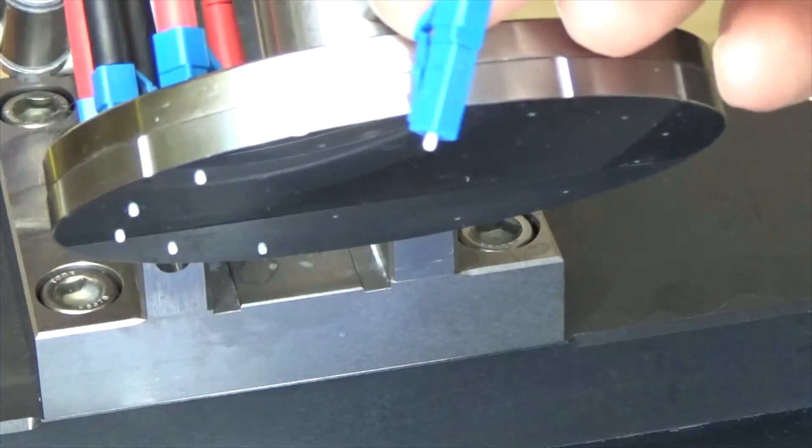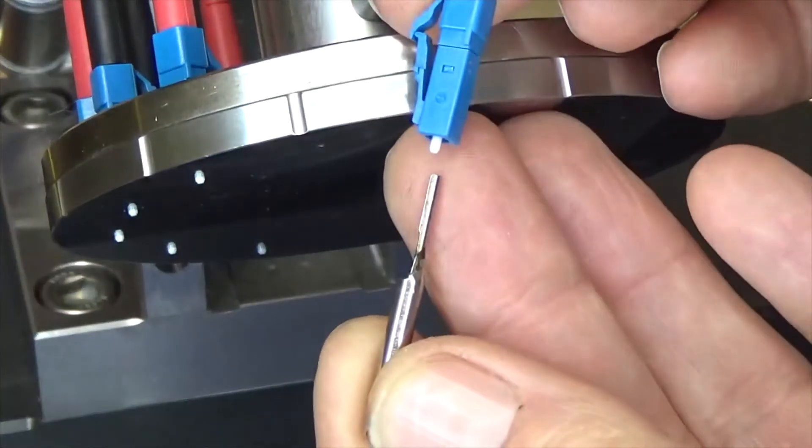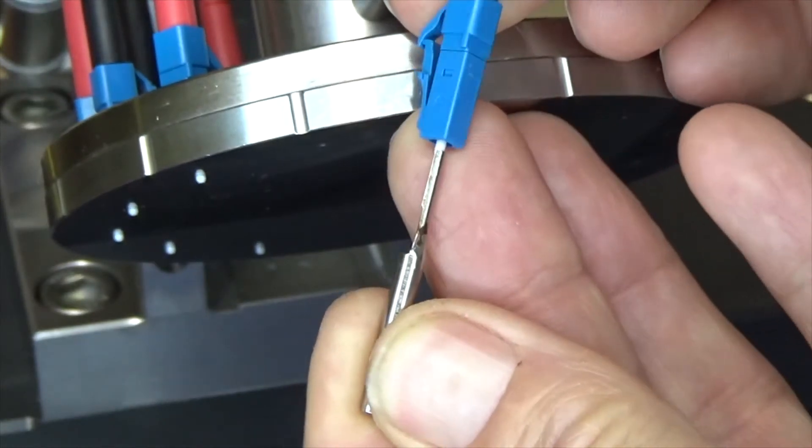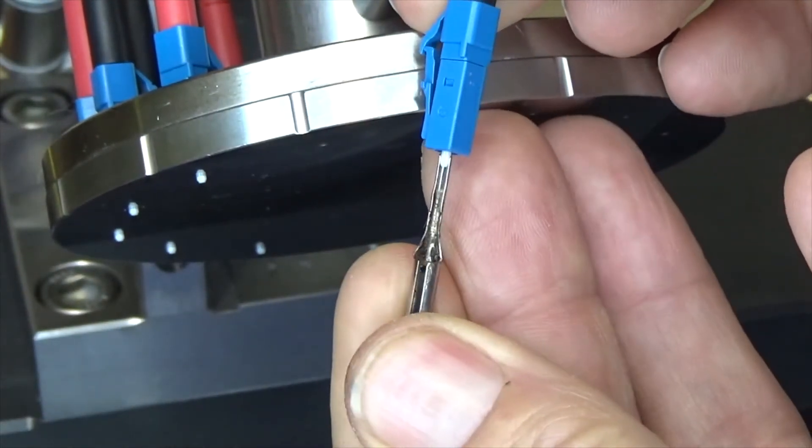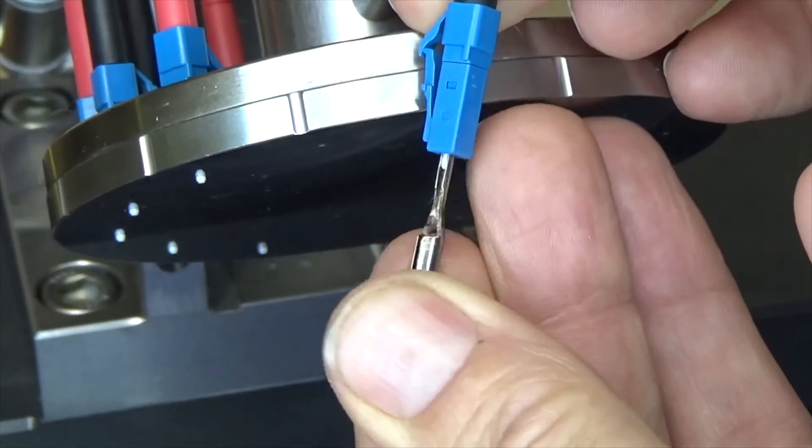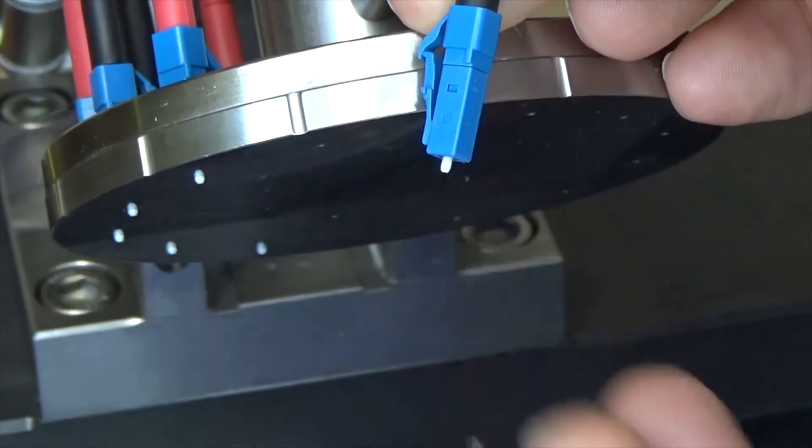If ferrules are not seated properly, the cause can be epoxy residue or dirt on the side of the ferrule from the curing process. An easy way to solve the issue is to rotate an oven protection tube over the ferrule and then clean with compressed air.